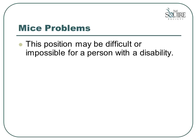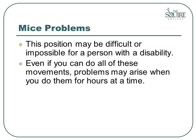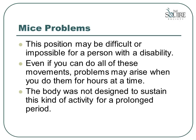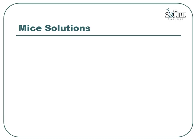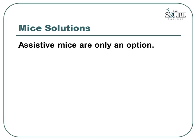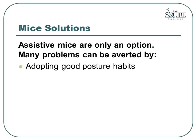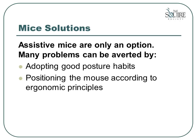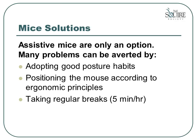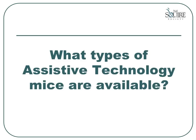This position may be difficult or impossible for somebody with a disability. Even if you can do all of these movements, problems may arise when you do them for hours at a time. The body was not designed to sustain this kind of activity for a prolonged period. Unfortunately, we get so involved in using the computer that we lose our awareness of our body position. As with the keyboard, assistive mice are only an option. Many problems can be averted by adopting good posture habits, positioning the mouse according to ergonomic principles, taking regular breaks, and stretching on a regular basis.